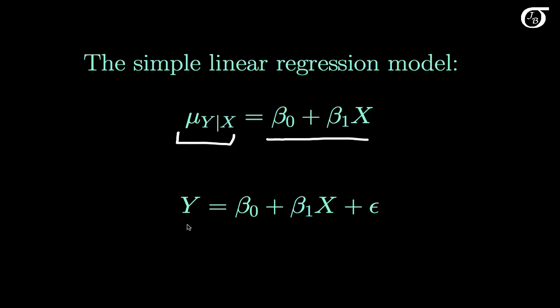This line. The y values themselves do not fall precisely on this line. We have this random error component representing the fact that the y values vary about that line.